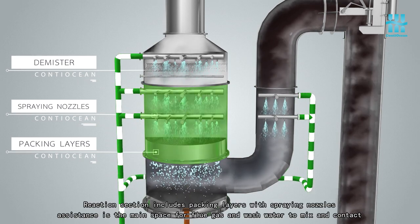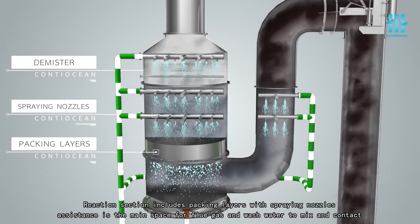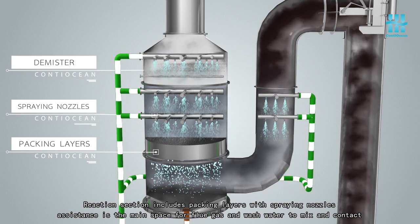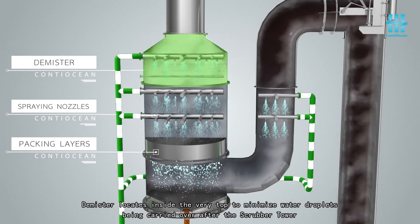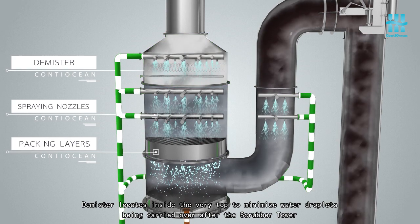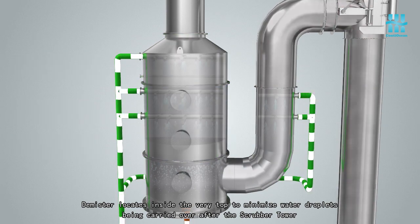Reaction section includes packing layers with spraying nozzles assistance. Flue gas is the main space for flue gas and wash water to mix and contact. Demister locates inside the very top to minimize water droplets being carried over after the scrubber tower.